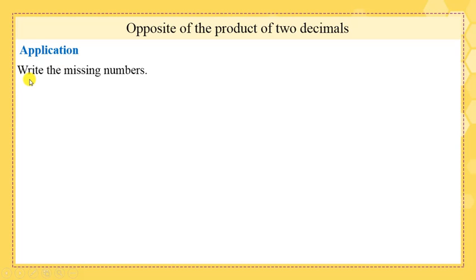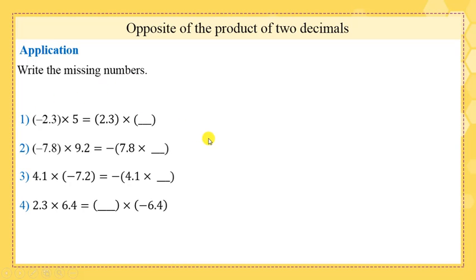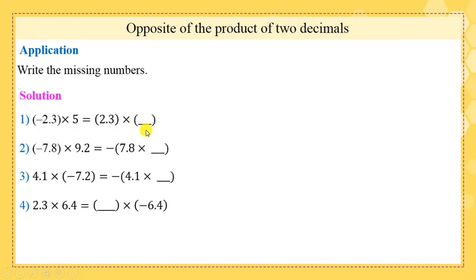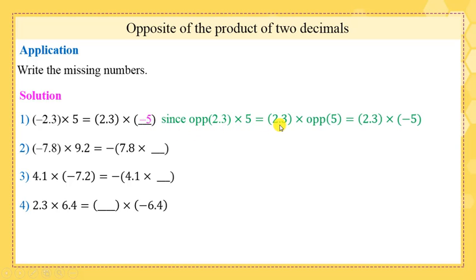Application: write the missing numbers. Please pause this video and try to solve the application. Part 1: negative 2.3 × 5 = 2.3 × what? Answer: negative 5. Since opposite of 2.3 × 5 = 2.3 × opposite of 5 = 2.3 × negative 5 — the first rule. Part 2: negative 7.8 × 9.2 = opposite of 7.8 × what? Answer: 9.2.